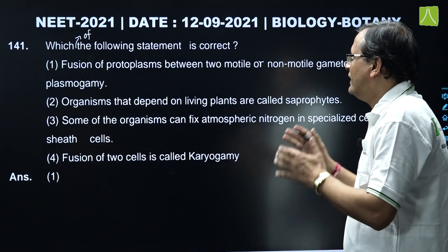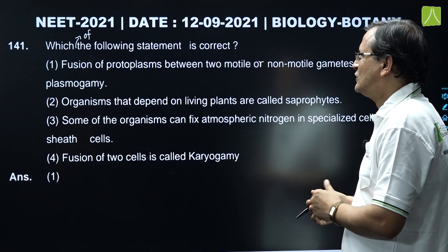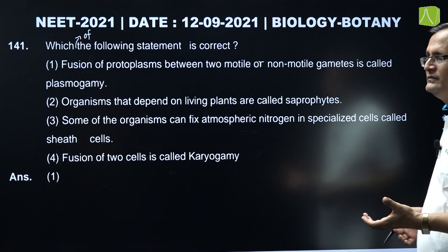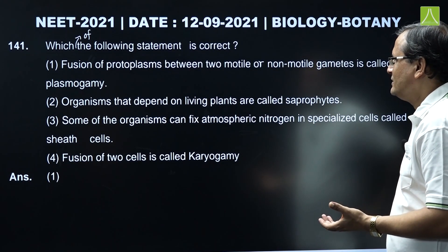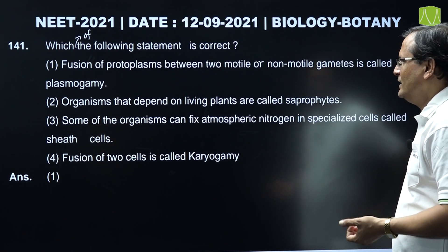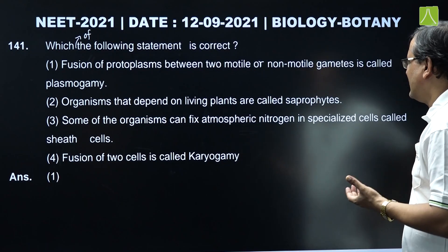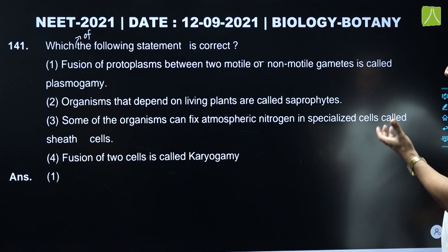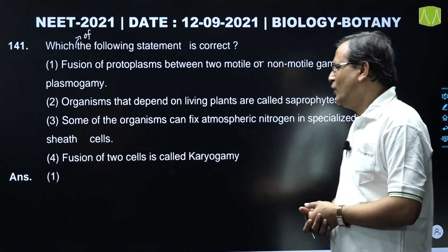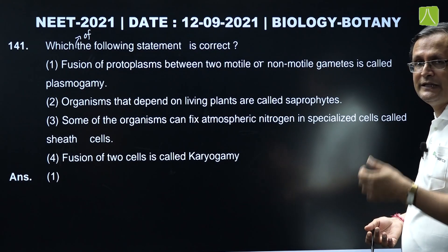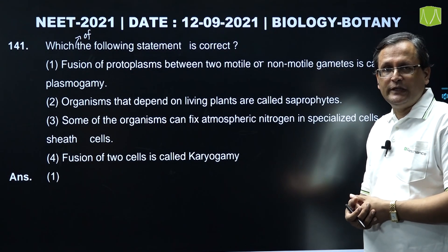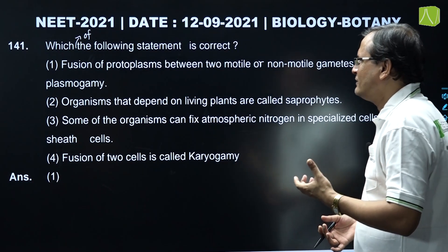Question 141: Which of the following statements is correct? Option A - fusion of protoplasm between two motile or non-motile gametes is called plasmogamy - yes, option A is correct. Organisms that depend on living plants are called saprophytes - that is wrong, those are called parasites. Some organisms can fix atmospheric nitrogen in specialized cells called heterocysts, as in blue-green algae. Fusion of two cells is called karyogamy - this is also wrong. Karyogamy refers to the fusion of two nuclei. So the first option is the correct answer.